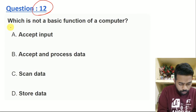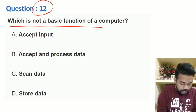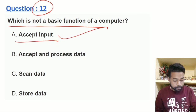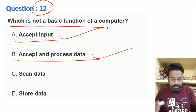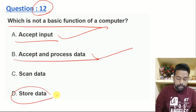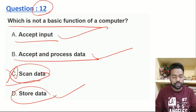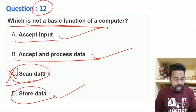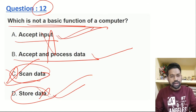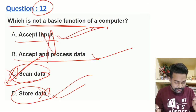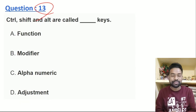The question is: which is not a basic function of a computer? The main functions of a computer are accept and process. You can see the basic functions for a computer. If you see option C, the same two functions are the same. The answer is option C.